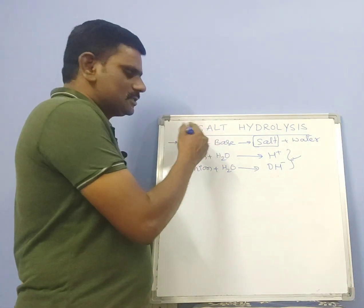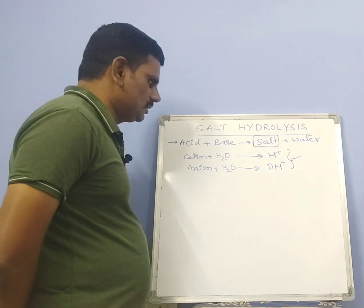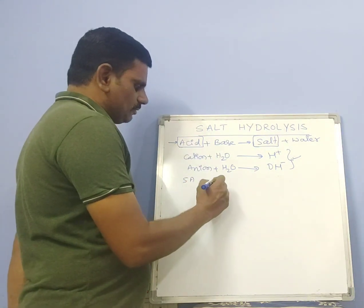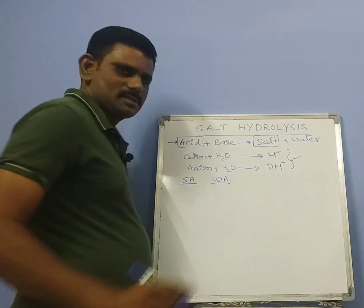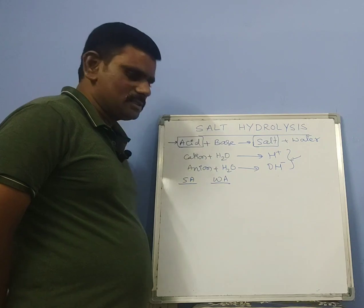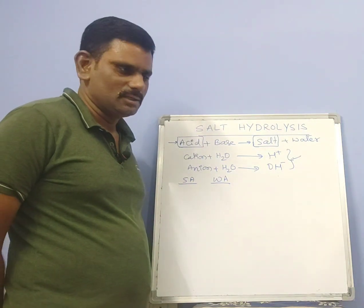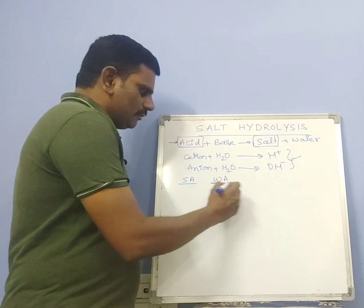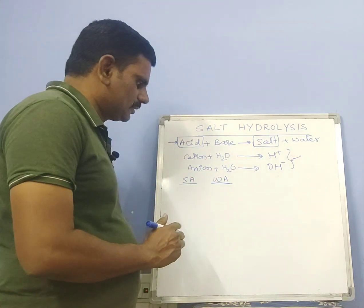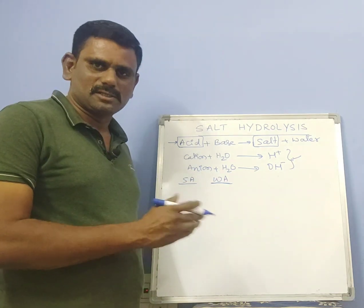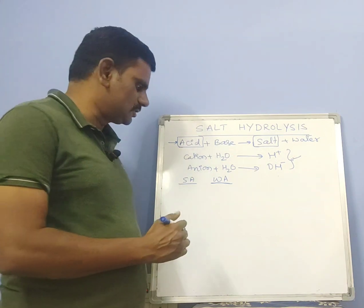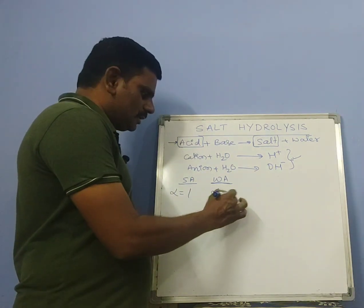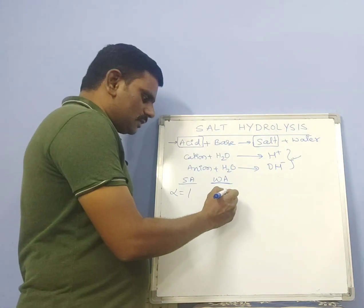Salt hydrolysis is the reverse process of neutralization reaction. Acids are of two types: strong acids and weak acids. Strong acids undergo complete ionization even at higher concentration — there is no effect of water on the extent of ionization. Weak acids partially undergo ionization; when dilution increases, extent of ionization also increases. The degree of dissociation of strong acids is one; for weak acids it is always less than one.